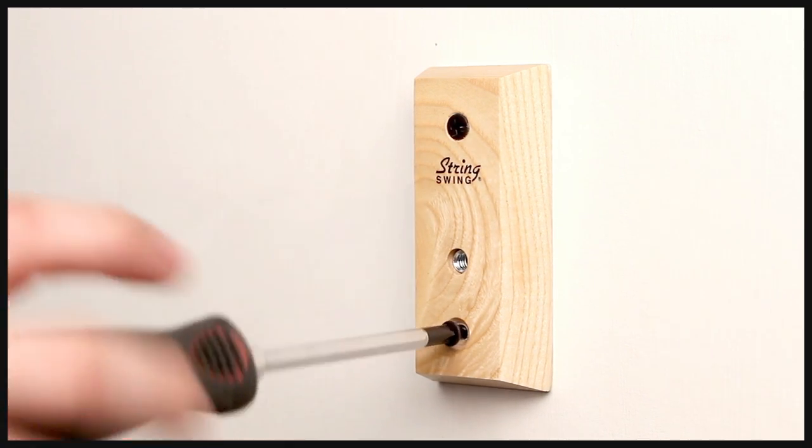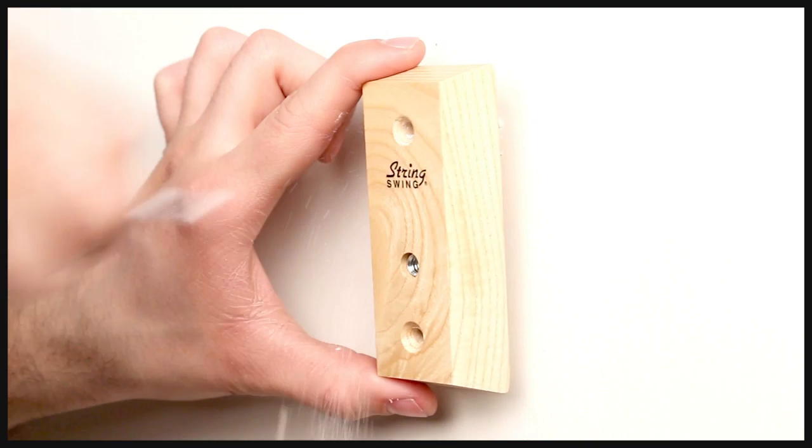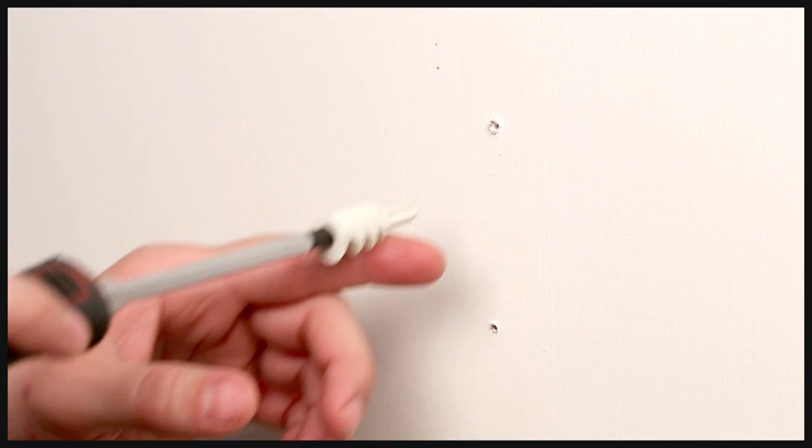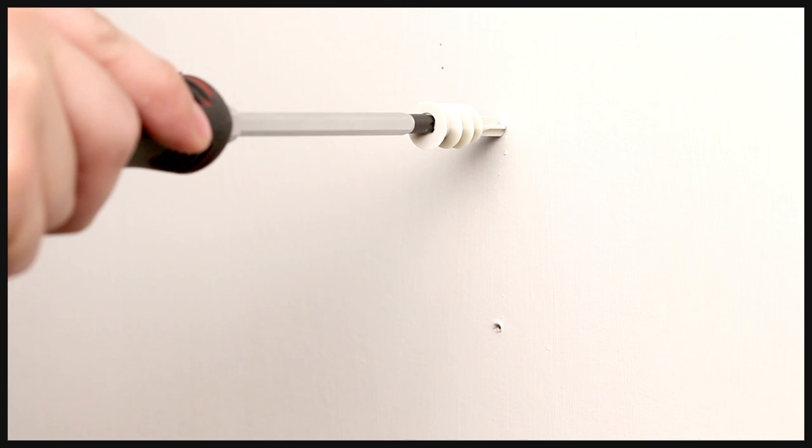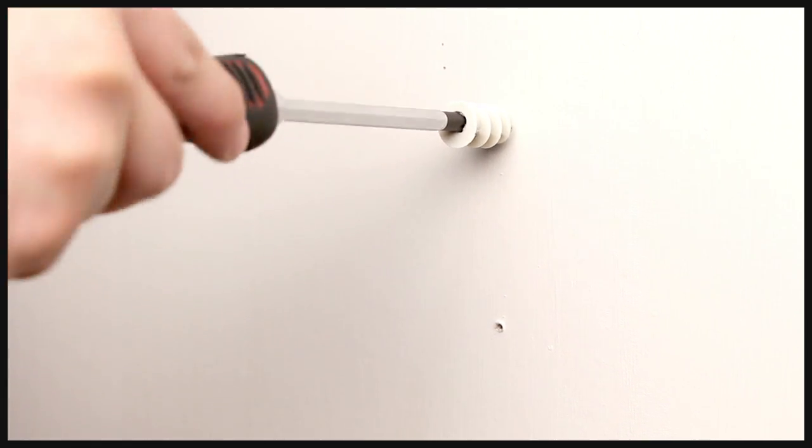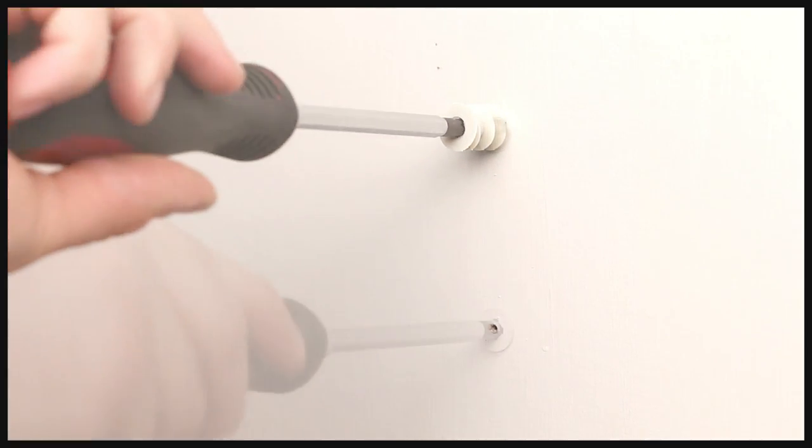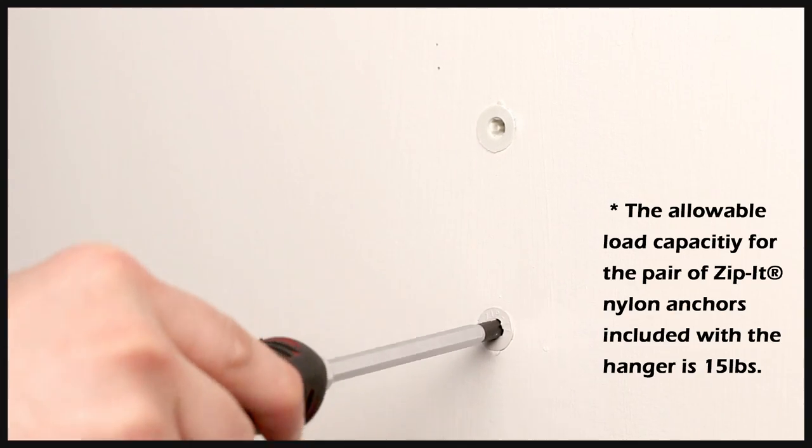To install the toggles, first remove the block from the wall. Then place the toggle on the end of the screwdriver and carefully press it into the hole left by the screw. When the threads make contact with the wall, rotate it clockwise until it is flush with the wall surface. Repeat the process for the second toggle.